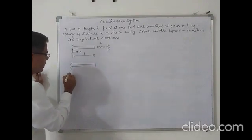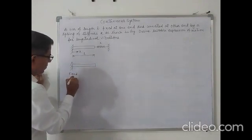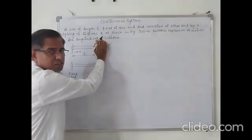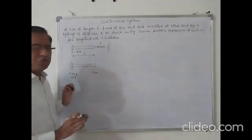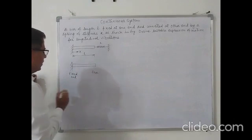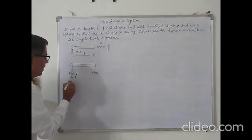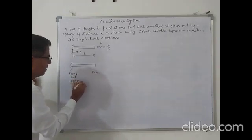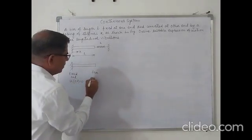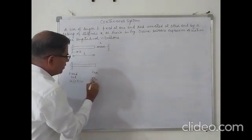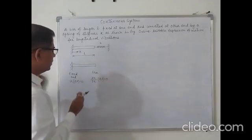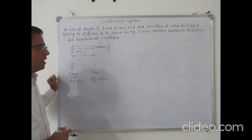This is the fixed end and this is the free end. Initially, do not consider the spring — this is a fixed-free type of problem. At the fixed end, the displacement u at x=0, t is 0. At the free end, the rate of change of displacement with respect to distance, del u by del x at x=L, t is 0. These are the boundary conditions for the fixed-free end.